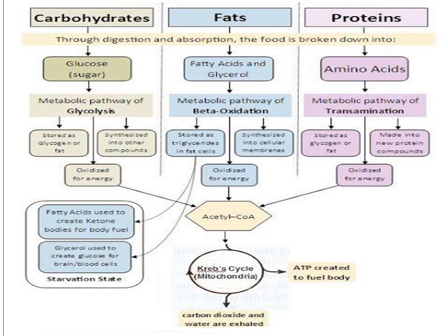In the diet, carbohydrate is 60%, protein is 30%, and fat is 10%. All three are required for metabolic pathways. Carbohydrate metabolism involves glycolysis. Then there is protein metabolism and fat metabolism.